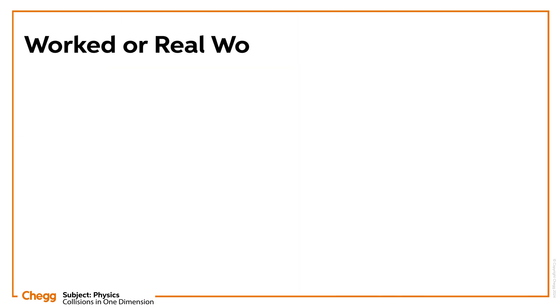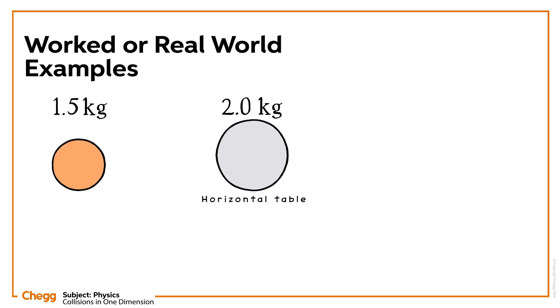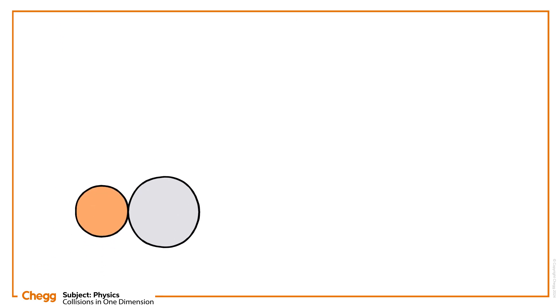Let's apply the equation to an example. A 1 kilogram ball is at rest on a horizontal table. Another 1.5 kilogram ball strikes it with a velocity of 4.5 meters per second. After colliding, the two balls stick together. At what velocity do they move?